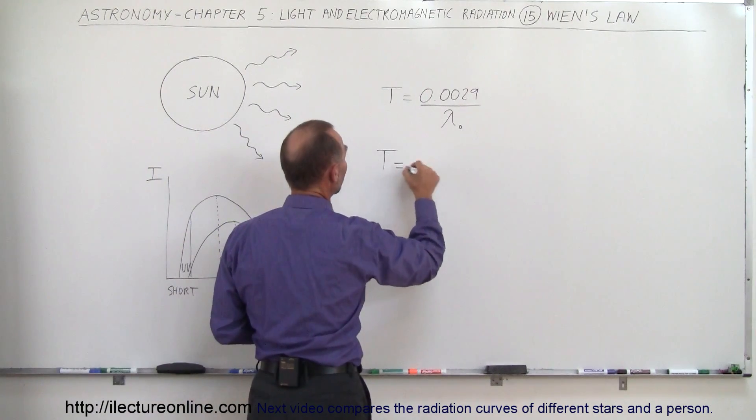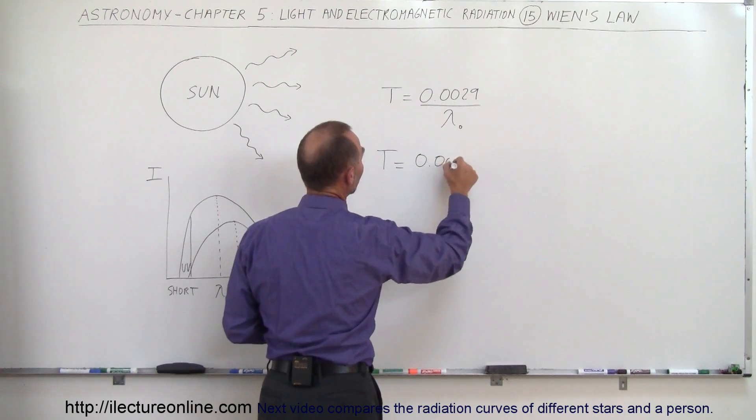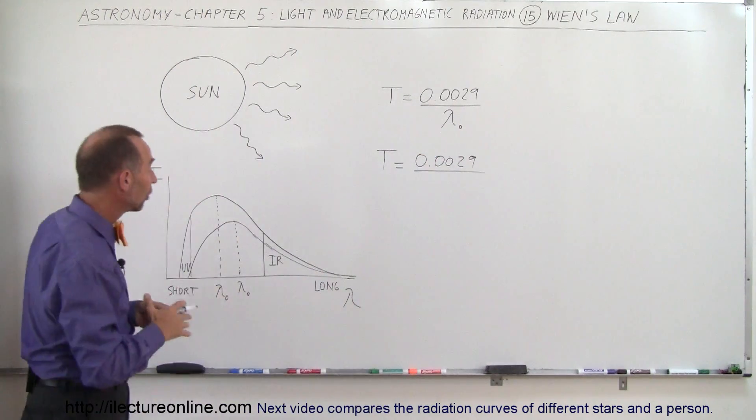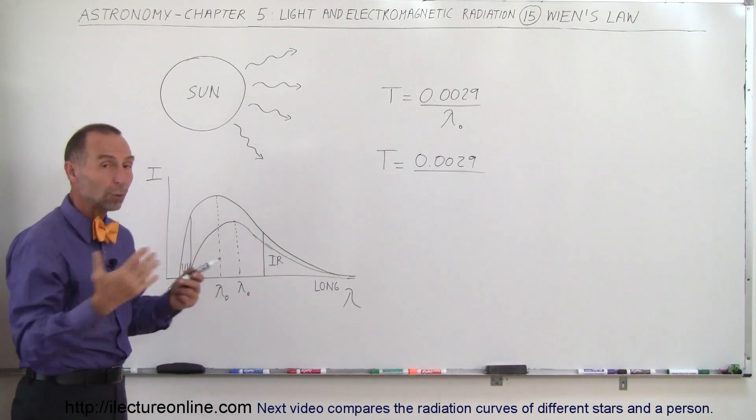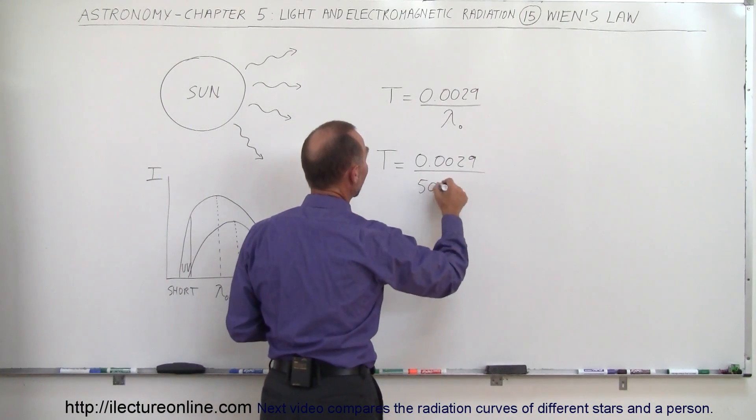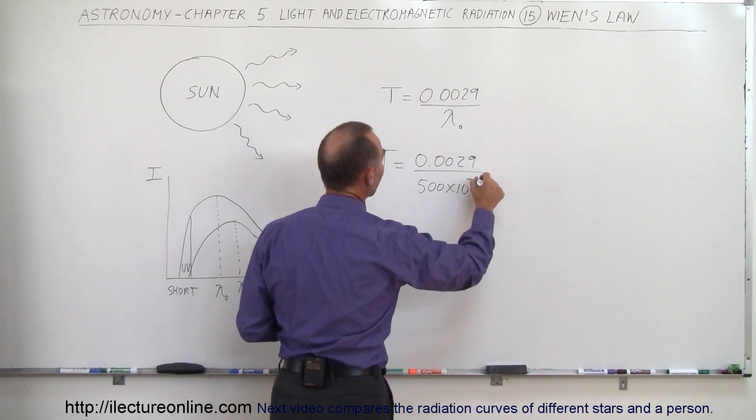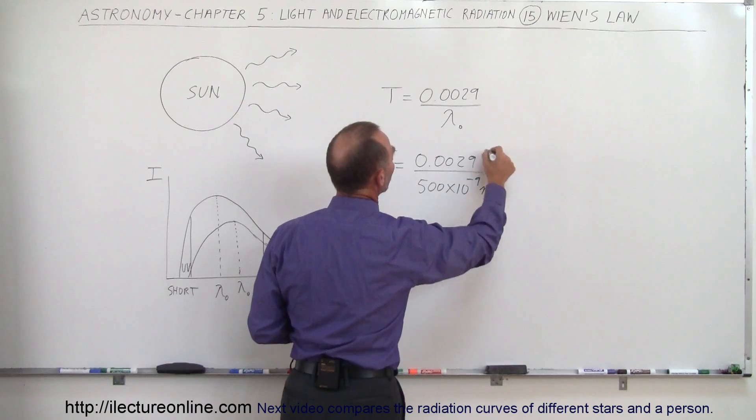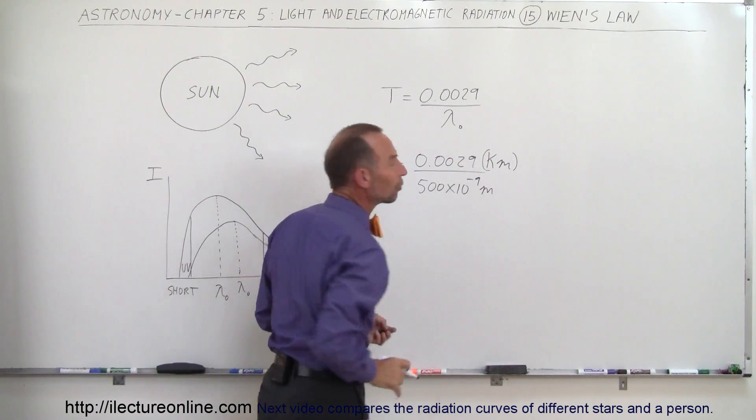So the temperature of the surface of the sun is equal to 0.0029 divided by the wavelength that occurs the most, which would be the peak wavelength, so we call that for yellow light 500 nanometers which is 500 times 10 to the minus 9 meters. And that would be Kelvin times meters for the units of the constant.